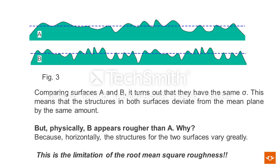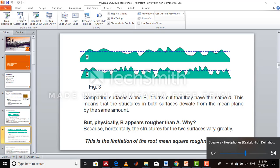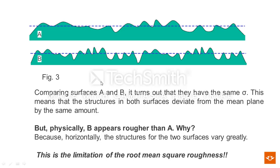If we consider two other surfaces A and B, we find that physically these surfaces look different. But when you compute root mean square roughness, A and B will have the same roughness — because the structures in both surfaces have the same deviation from the mean plane, indicated in blue. But physically B appears rougher than A because horizontally the structures of the two surfaces are different. This is the limitation of root mean square roughness: it does not give the lateral roughness difference between surfaces.